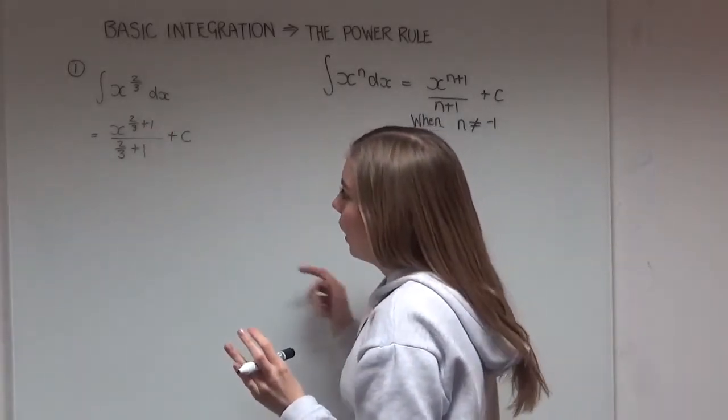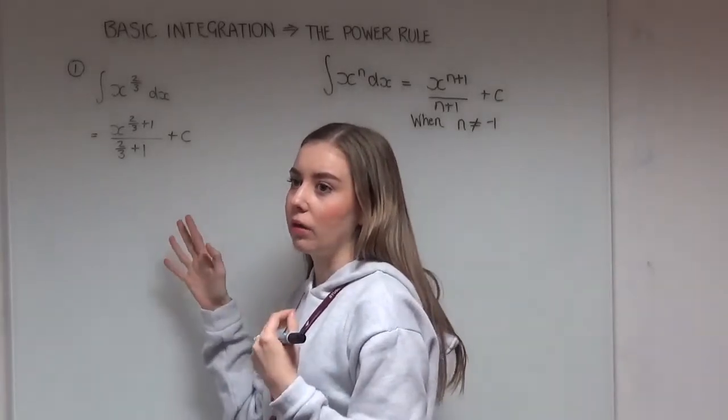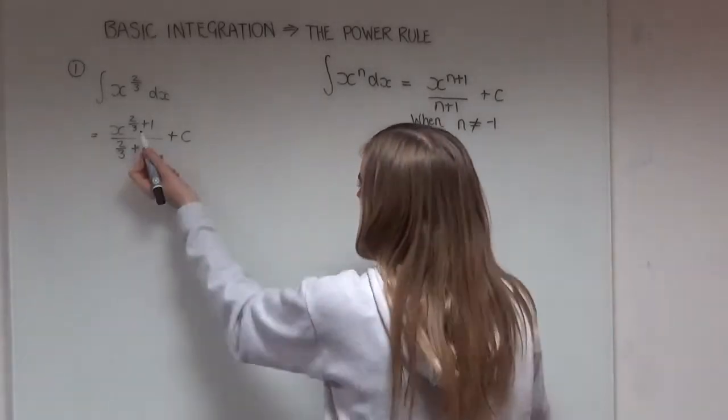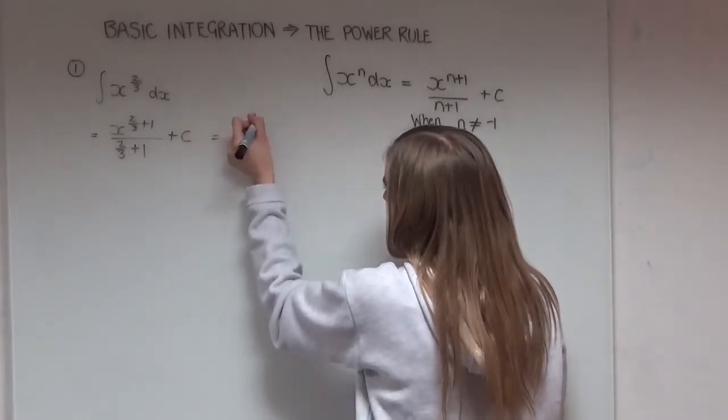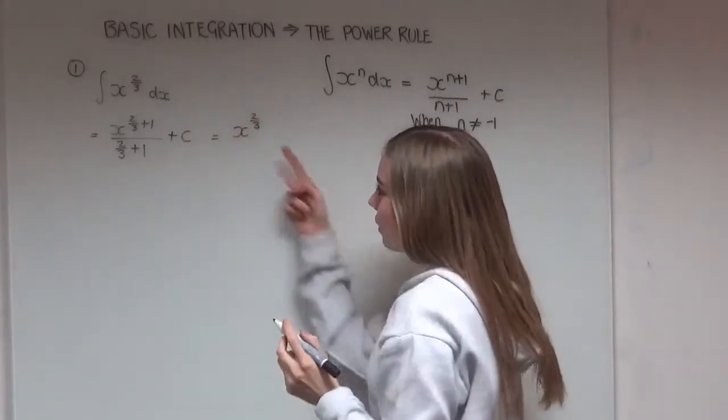Now when you're adding 1 to a fraction it might help to think about it in terms of that fraction in particular. So what I mean is if we have x to the power of 2 over 3, that's in terms of thirds.